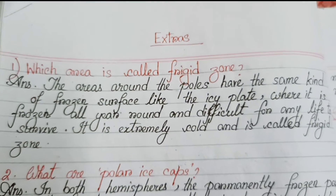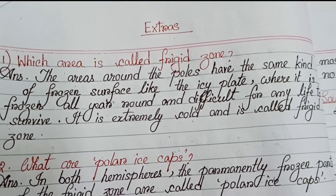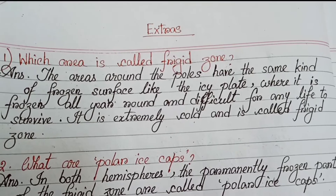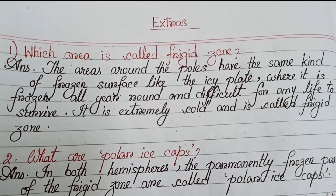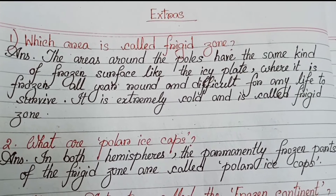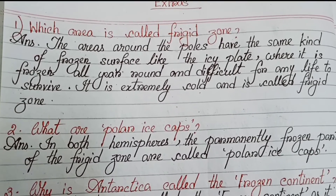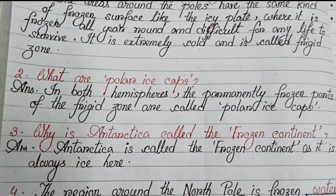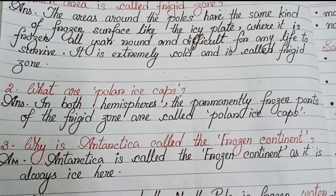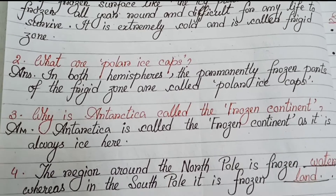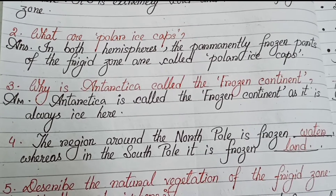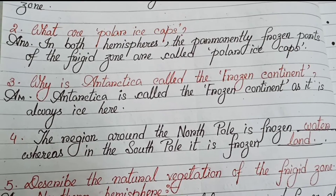Extra question answers. Number one: Which area is called the frigid zone? The areas around the poles have a frozen surface where it is frozen all year round and difficult for any life to survive — extremely cold, called the frigid zone. Number two: What are polar ice caps? In both hemispheres, the permanently frozen parts of the frigid zone are called polar ice caps. Number three: Why is Antarctica called the frozen continent? Antarctica is called the frozen continent as it is always ice there.